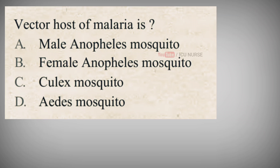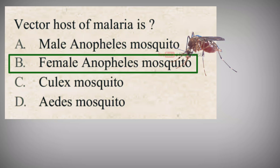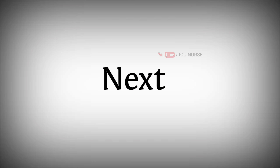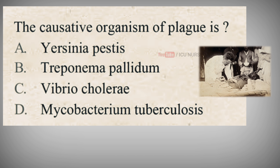Vector host of malaria is? A. Male Anopheles mosquito, B. Female Anopheles mosquito, C. Culex mosquito, D. Aedes mosquito. The correct answer is B. Female Anopheles mosquito. Malaria is transmitted to humans by female mosquitoes of the genus Anopheles. Female mosquitoes take blood meals for egg production, and these blood meals are the link between the human and the mosquito host in the parasite life cycle.